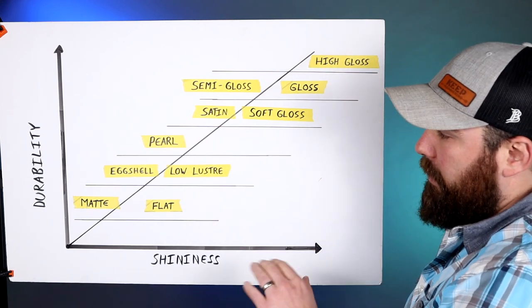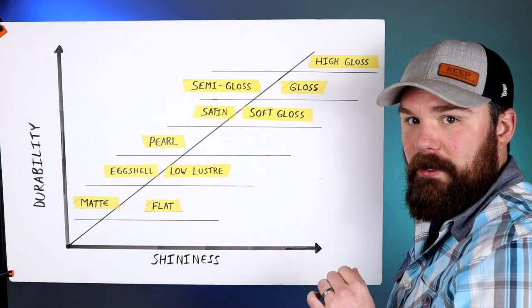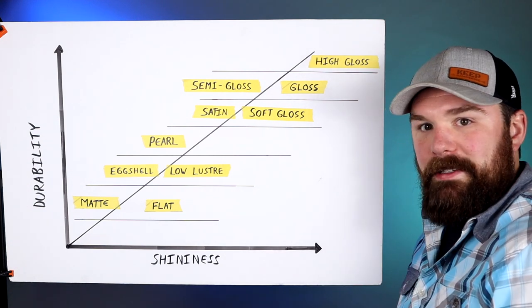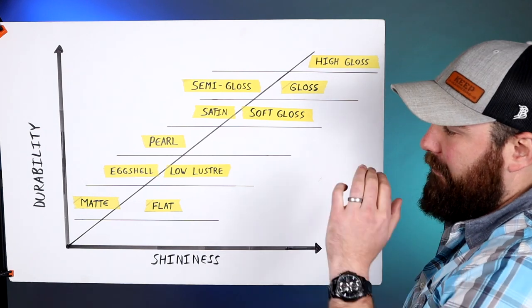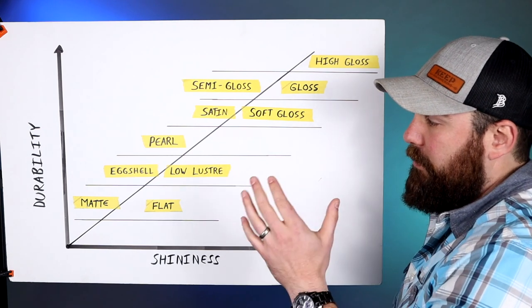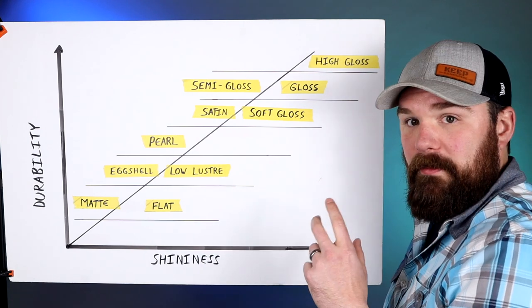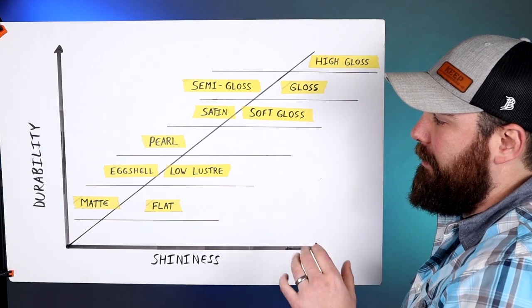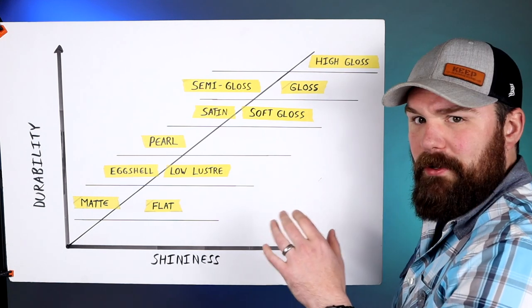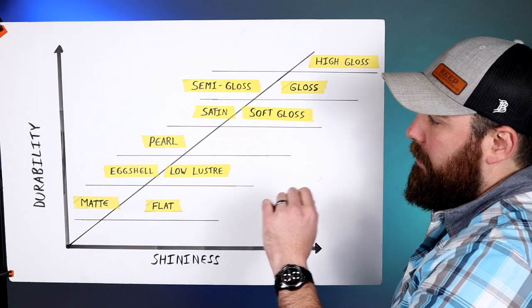So moving on up to low luster, that is my favorite sheen to use on exterior walls. So that would be siding, stucco, painted brick, any of that stuff, that's what we're using. And we use the low luster from Regal Select line of paints from Benjamin Moore. It's really really nice, I like how it finishes, and that's kind of what we use on all the main large exterior surfaces that we paint.